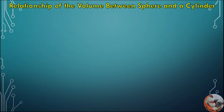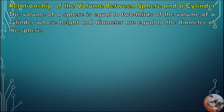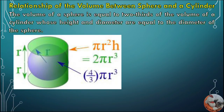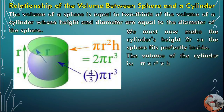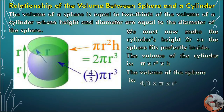Next, we have the relationship of the volume between a sphere and a cylinder. The volume of a sphere is equal to two-thirds of the volume of the cylinder whose height and diameter are equal to the diameter of the sphere. The cylinder's height must be 2r so the sphere fits perfectly inside. The volume of the sphere is V = 4/3 × π × r³.